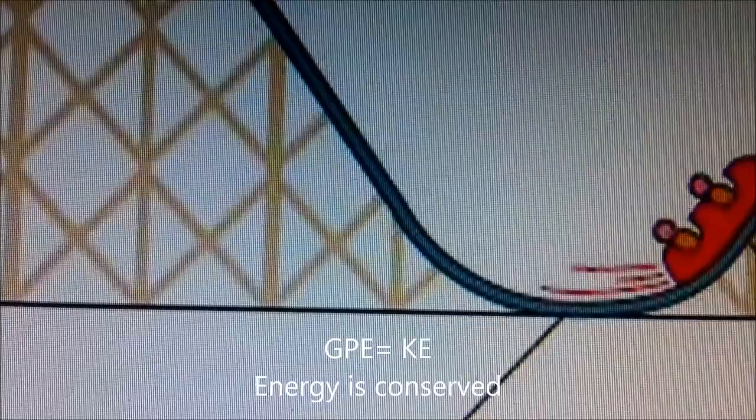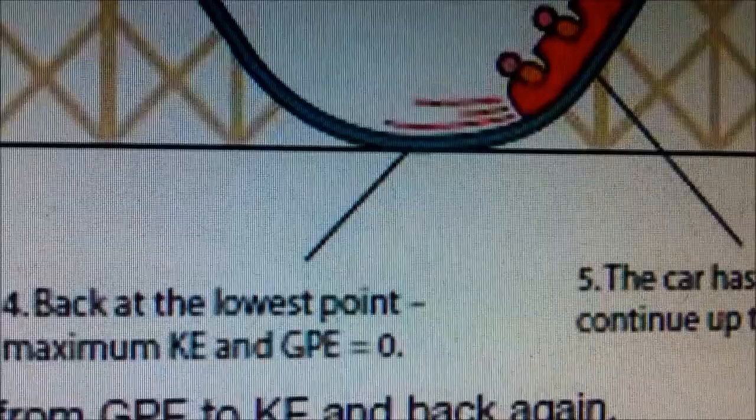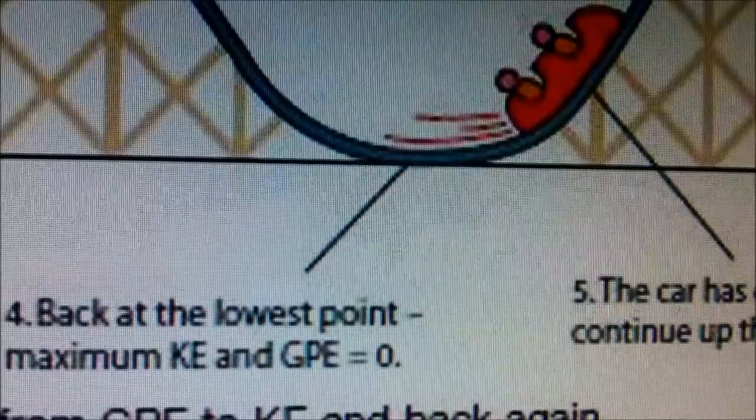At the bottom of the slope, we have maximum kinetic energy because it's moving at the fastest speed. But no gravitational potential energy. And the same thing continues.